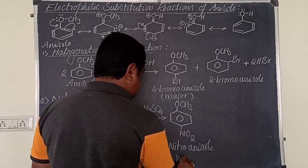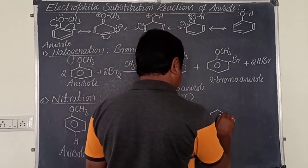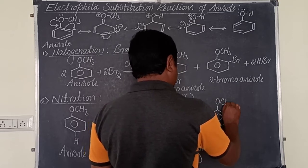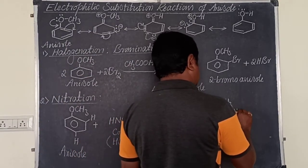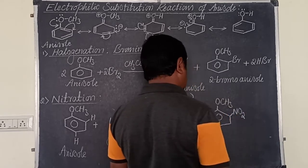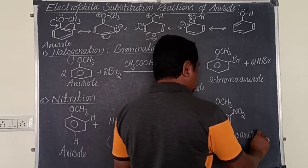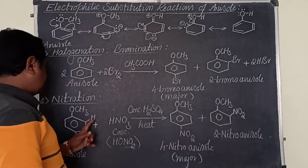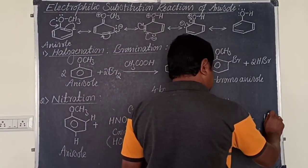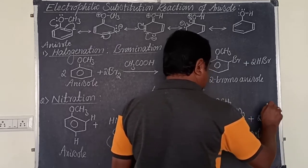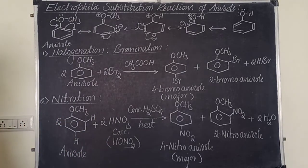4-nitroanisole is the major product. In another molecule, at the ortho position, hydrogen is replaced by the nitro group, giving 2-nitroanisole. The hydrogens are removed as H+, which combines with OH− to give water — two moles of water. So we take two moles of nitric acid and two moles of anisole for balancing.